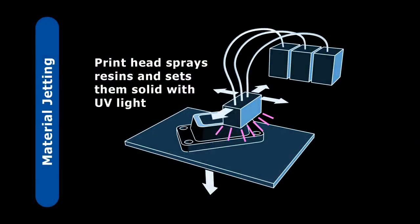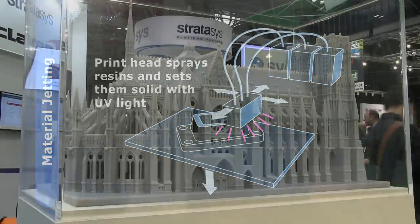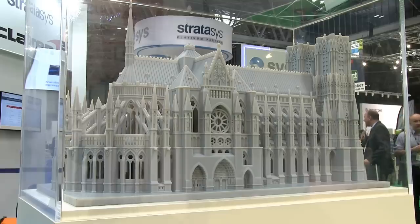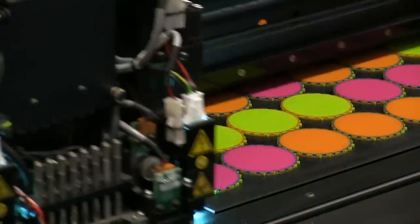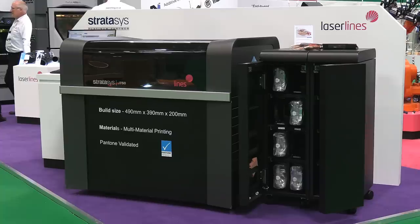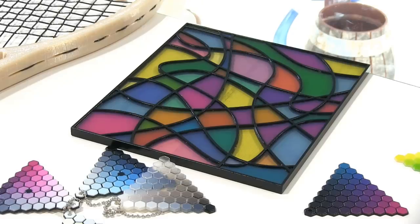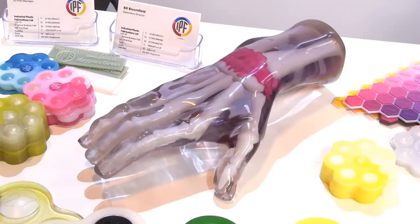A related 3D printing process is material jetting, which again forms object layers from photo-curable resins. But here the resins are sprayed from a moving print head which sets them solid with UV light. This removes the need for a VAT and also allows objects to be built from multiple materials. As with VAT photopolymerization, material jetting resolution and surface quality are excellent, and some printers can even output objects in full colour. These include the Stratasys J750, which produces amazing multi-colour prints like this, and this, and also this.